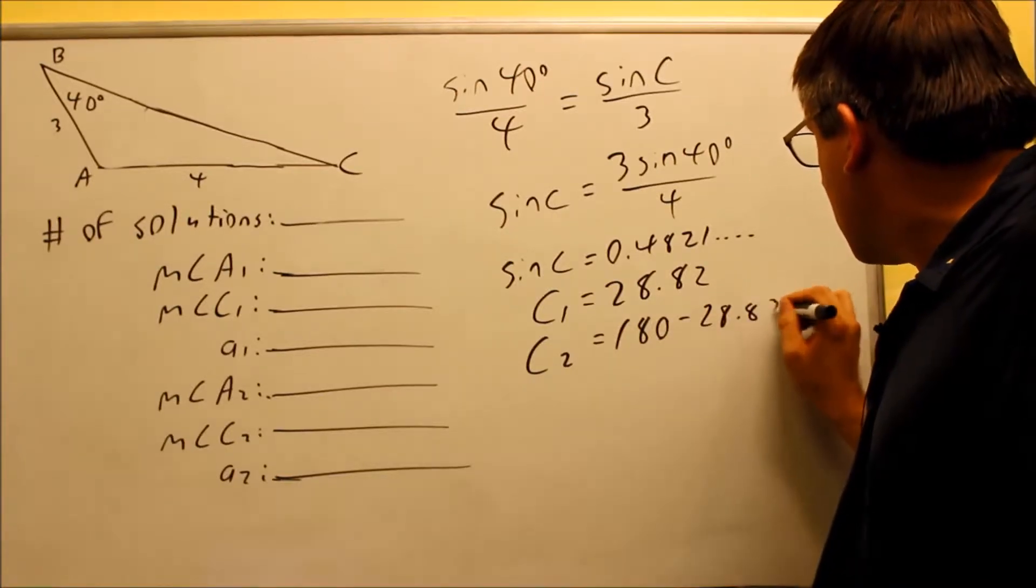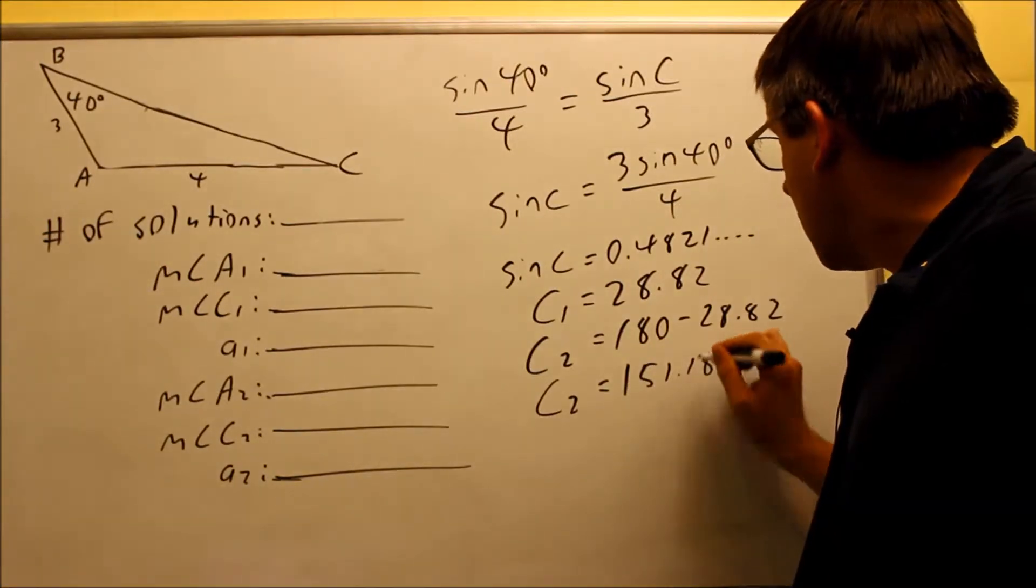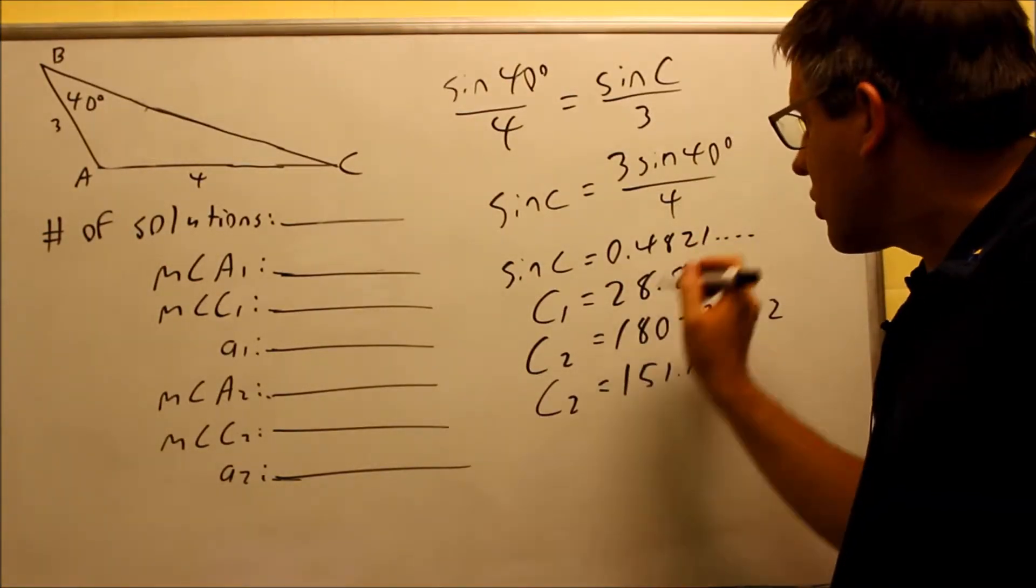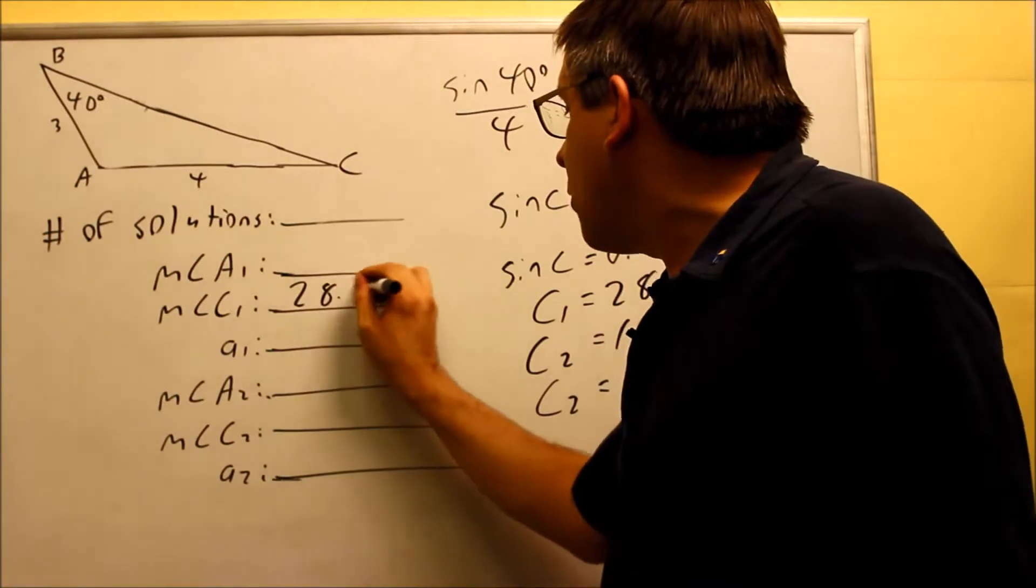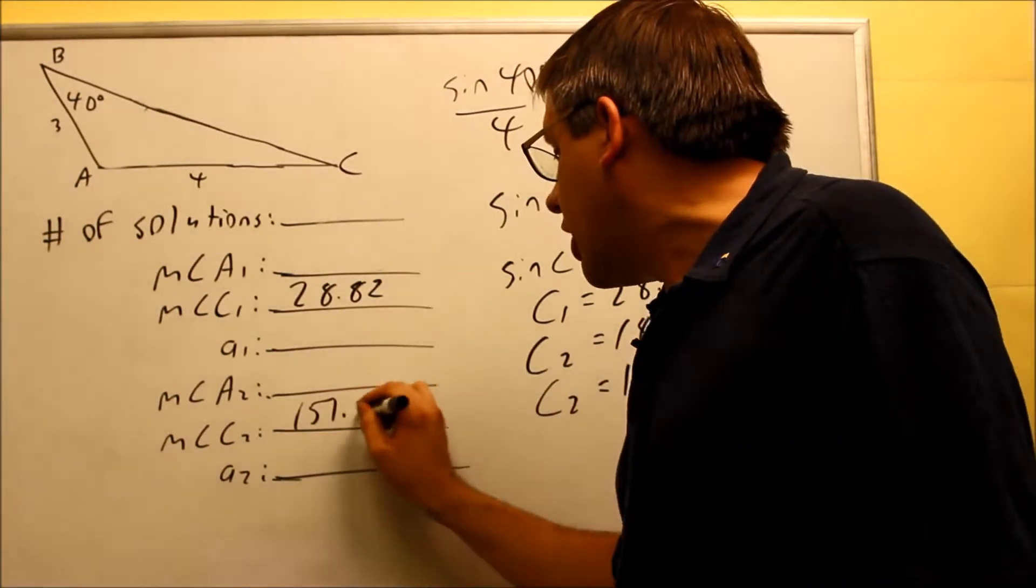We're going to subtract 28.82 from 180. We're going to get our secondary solution, 151.18. So here's our two solutions. C1 is 28.82. The second one is 151.18.